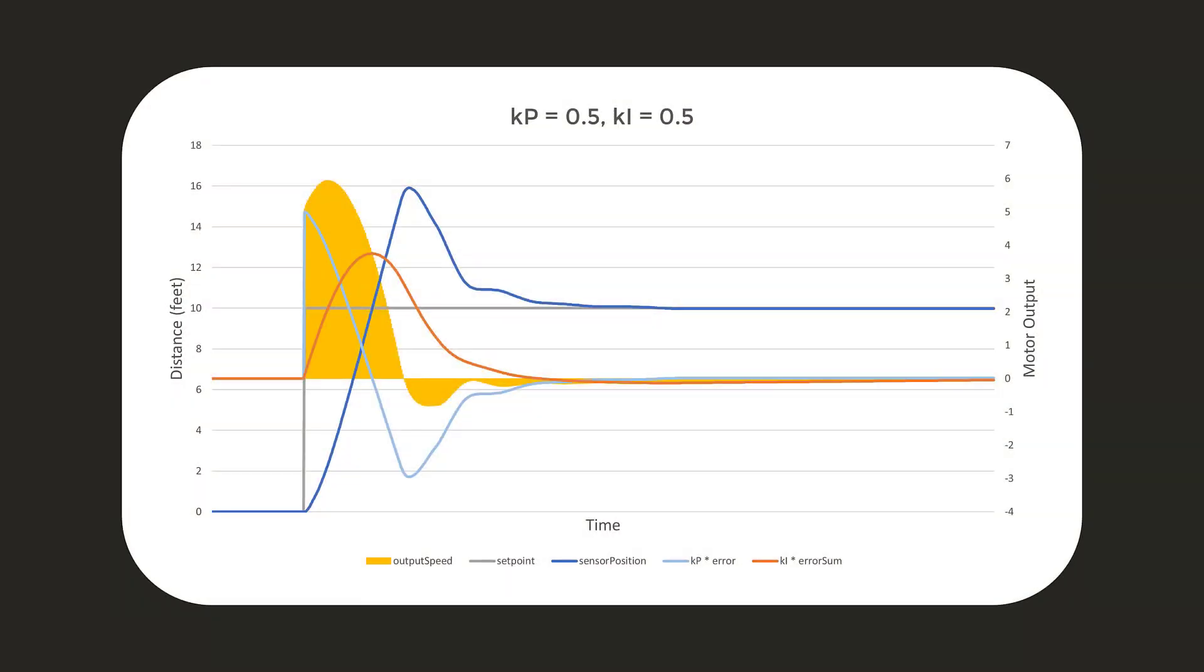This is a graph of what just happened. The grey line, the blue line, and the yellow area are the same as before. The light blue line represents the amount of output contributed by the proportional term. Similarly, the orange line represents the output of the integral term. We can see that the robot gradually settled down at exactly 10 feet. However, it went well past 10 feet in the process, and we do not want that.